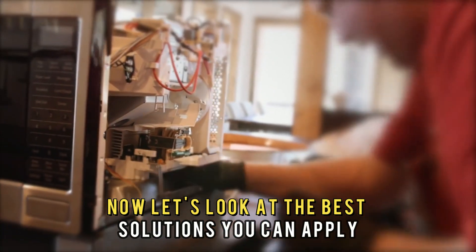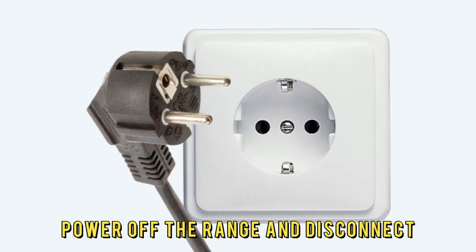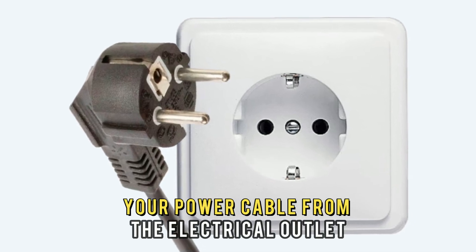Now let's look at the best solutions you can apply to fix the E-27 error. Checking the oven sensor. Power off the range and disconnect your power cable from the electrical outlet.